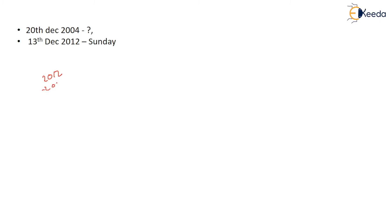Okay, this next question you have to go backward using the same formula. 2012 minus 2004 — how much is remaining? 8. And 13 minus 20 gives you minus 7.